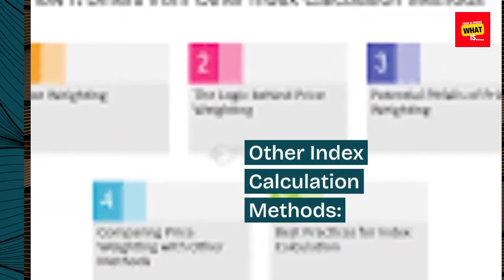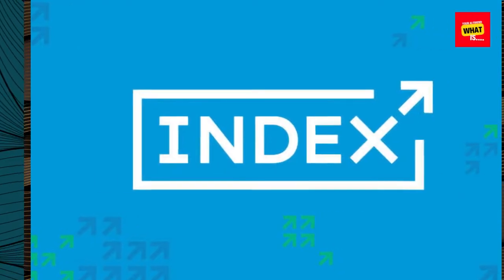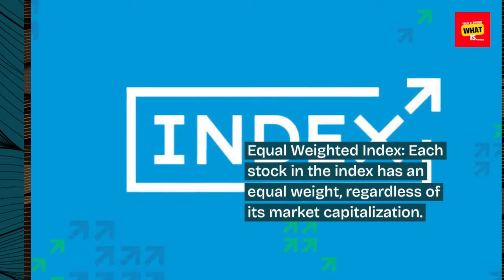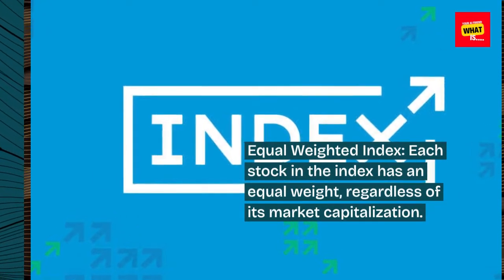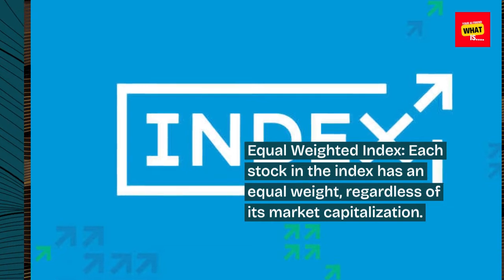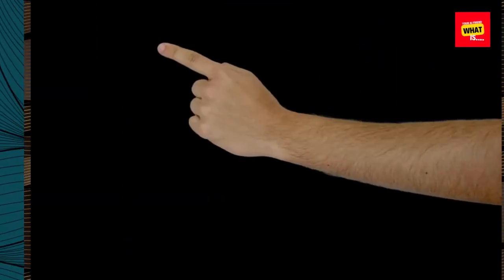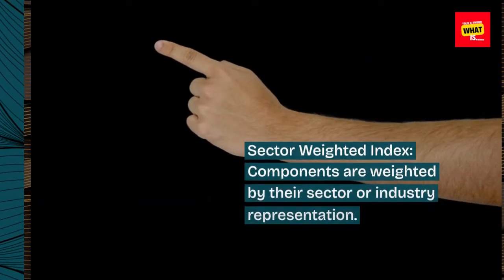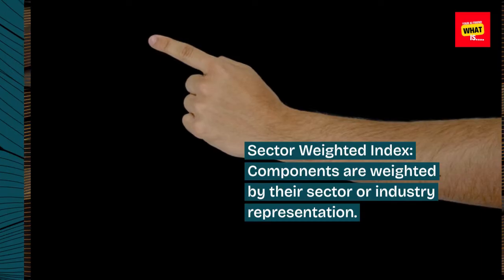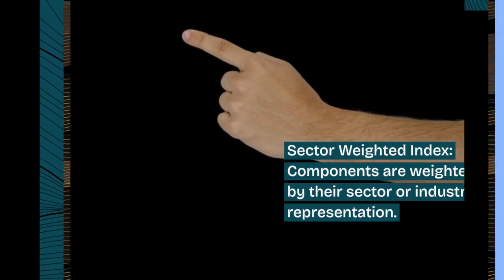Other index calculation methods. Equal-weighted index: Each stock in the index has an equal weight regardless of its market capitalization. Sector-weighted index: Components are weighted by their sector or industry representation.